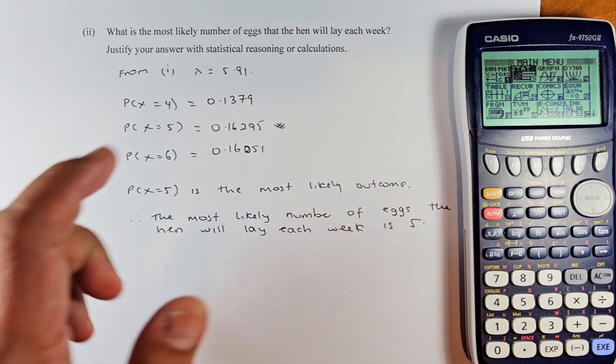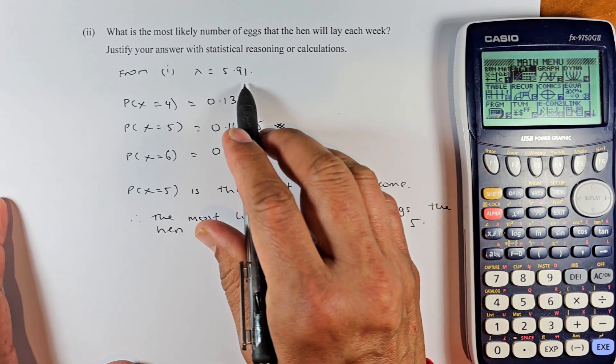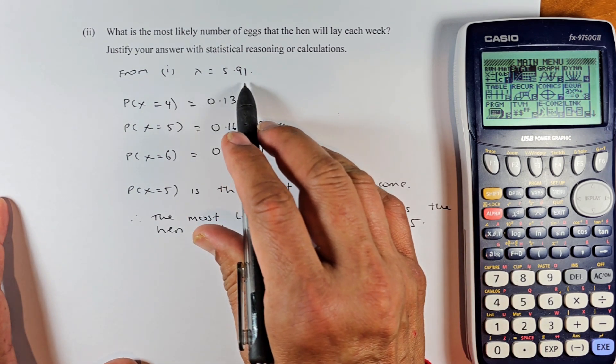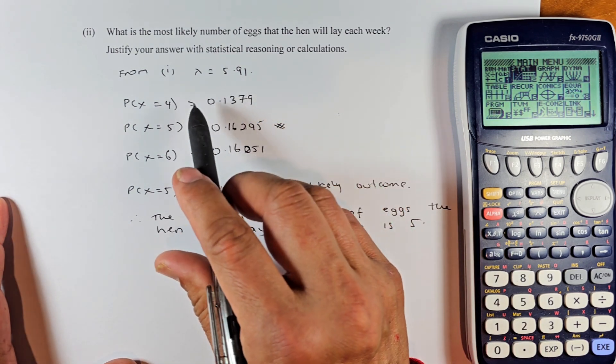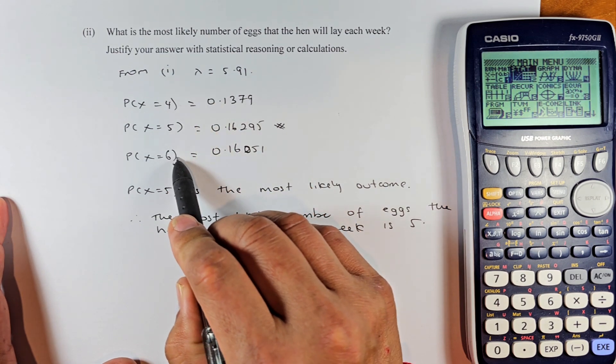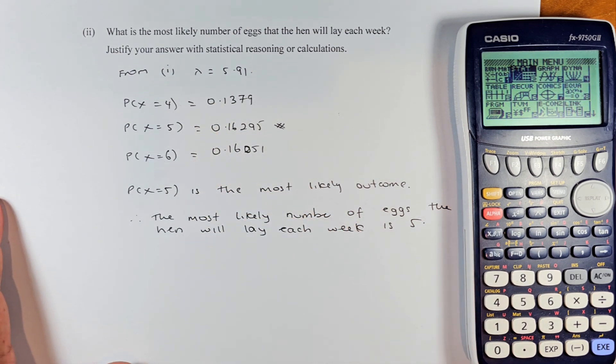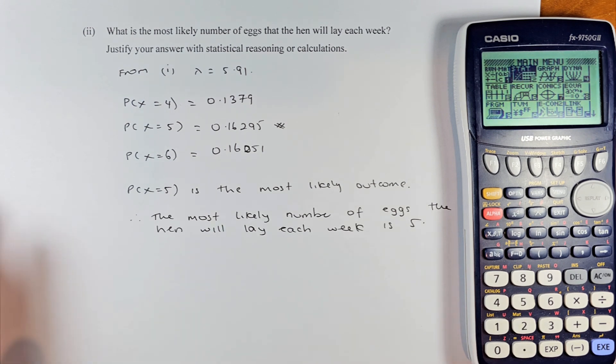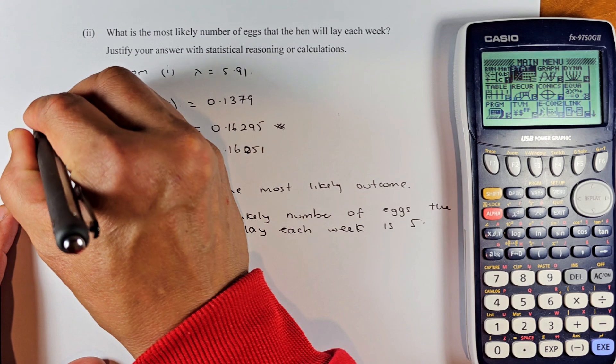From part 1, we know that lambda or the mean was 5.91. We're going to use this mean to solve when x equals 4, x equals 5, x equals 6, because we're going to calculate which has the highest probability. This is a point, so we're going to use PPD. If it is accumulating from 0 to 1 number, it's going to be PCD. But because we need to know x equals 4, 5, and 6, it's going to be PPD in your calculator.